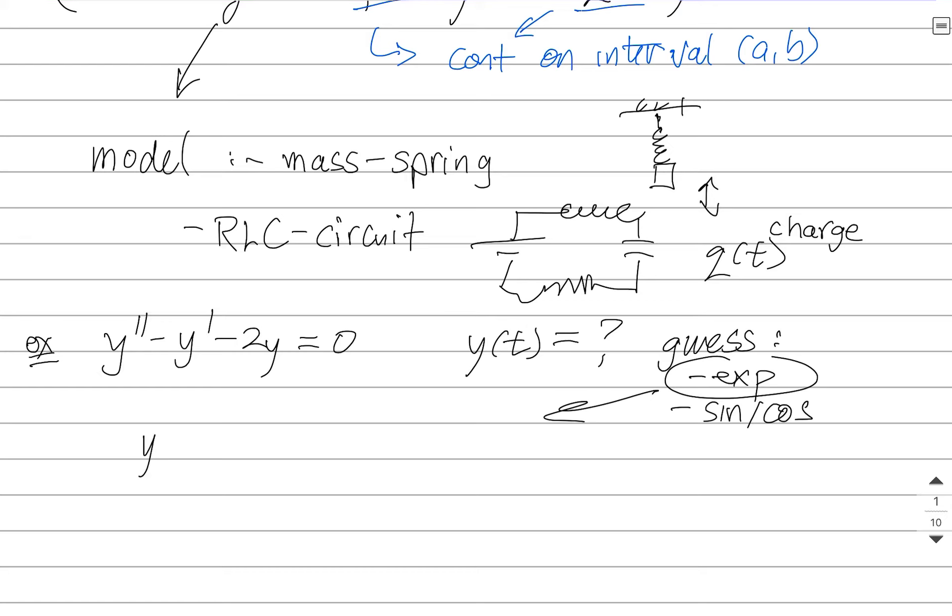And what I mean by that is, let's say we're going to assume that we're going to guess that the solution should look something like this, e to the lambda t, so that when I differentiate it, I'll get lambda e to the lambda t, and when I take the second derivative, I just use the chain rule again, and I get all of this stuff.